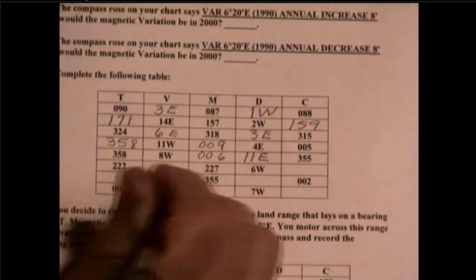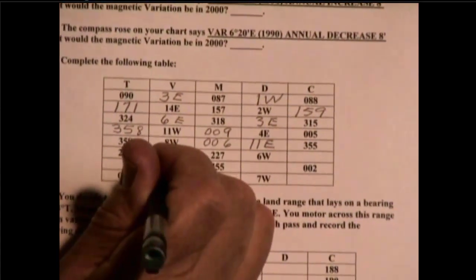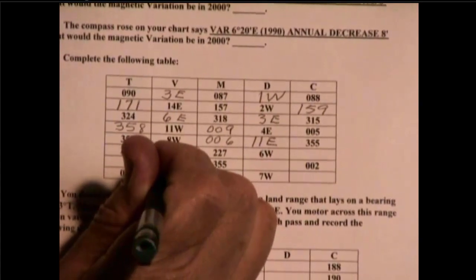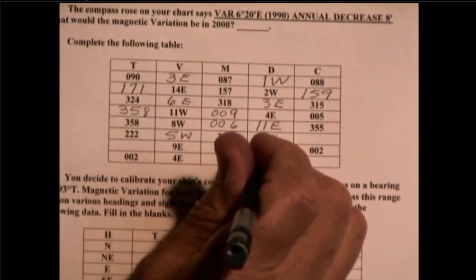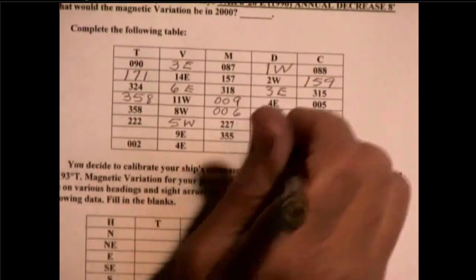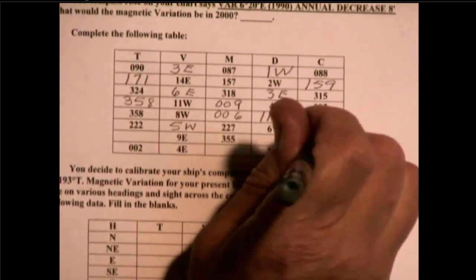Well, let's go through the rest of these. 222 to 227 is going to be a plus or 5 west. 227 plus 6 west. A plus is going to be 233.